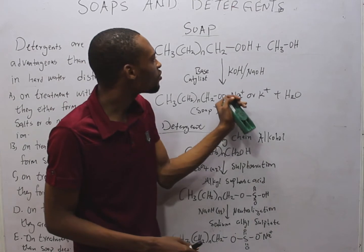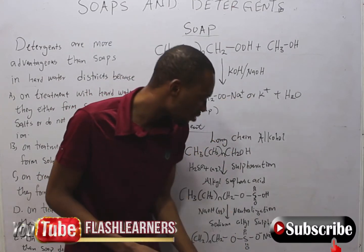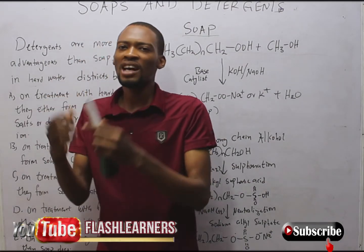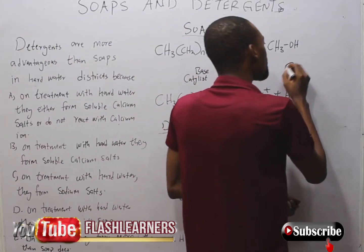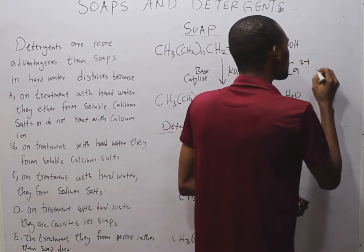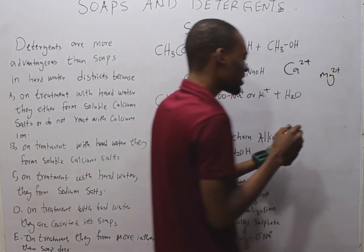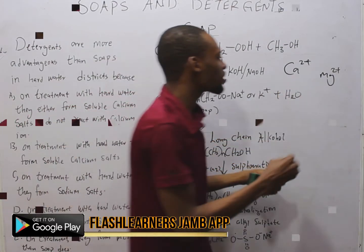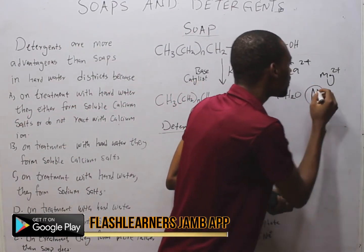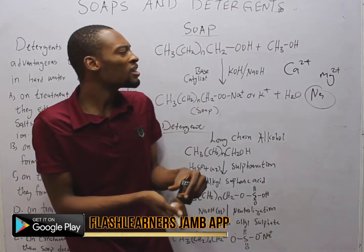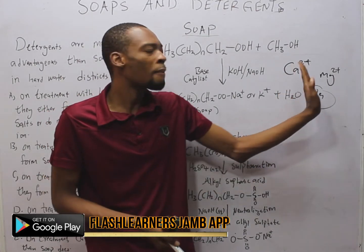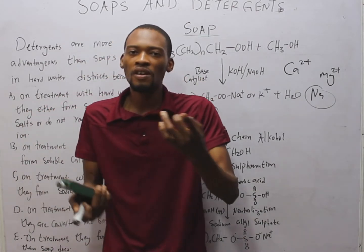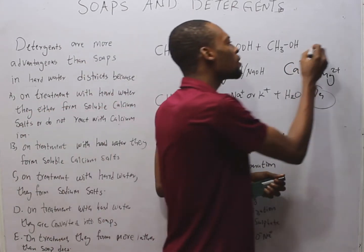Since soaps are sodium or potassium salts and detergents are sodium salts, when we have hard water — which contains dissolved calcium ions and magnesium ions — these sodium salts in soaps form insoluble calcium and magnesium salts respectively, which do not dissolve. Therefore, they begin to form scum.